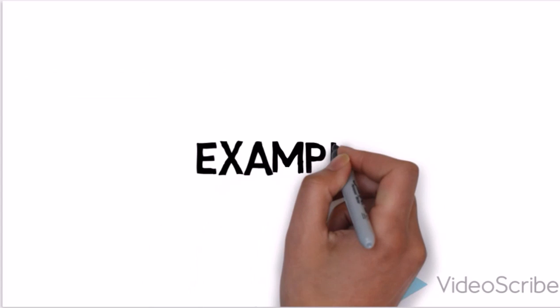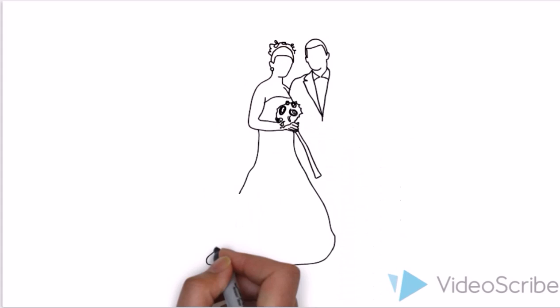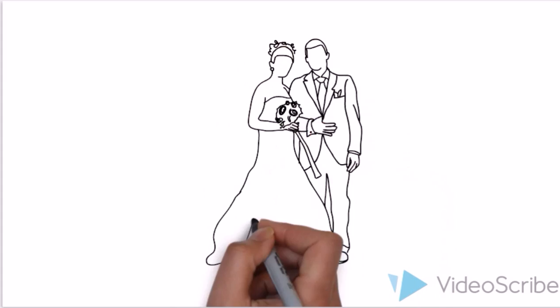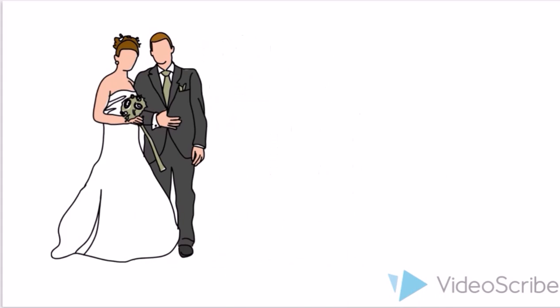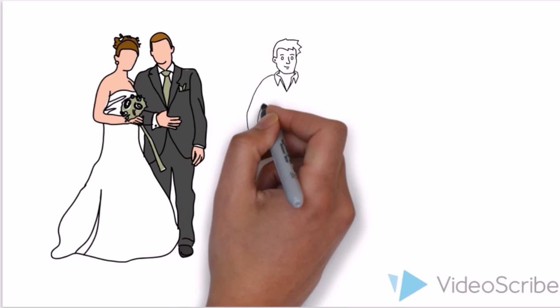When we say, for example, that there are twice as many married employees as single employees, we mean that the ratio of married to single employees is 2 is to 1, where 2 represents married employees and 1 represents single employees.